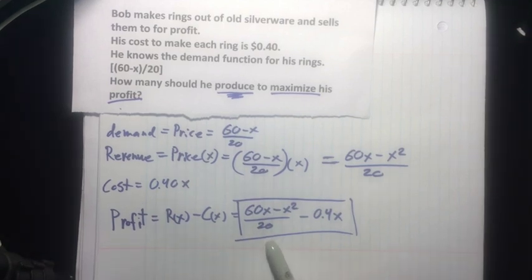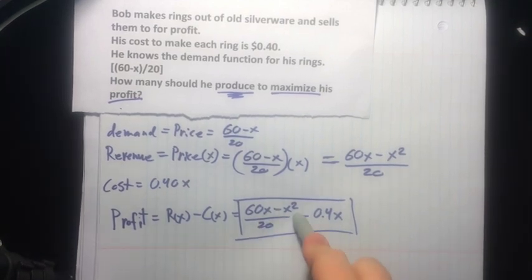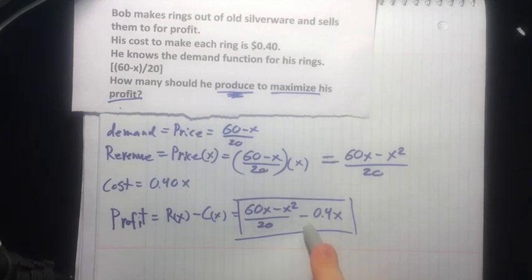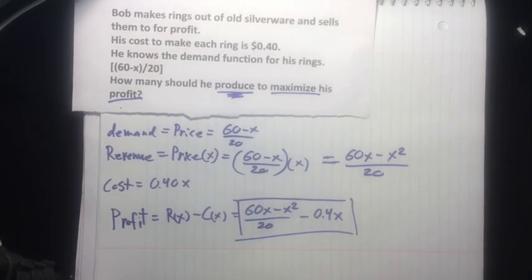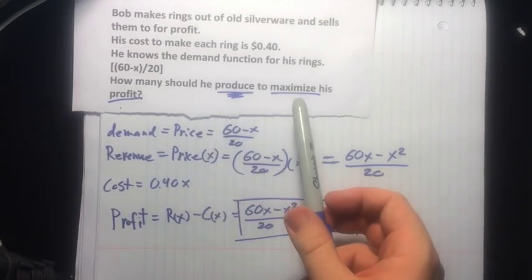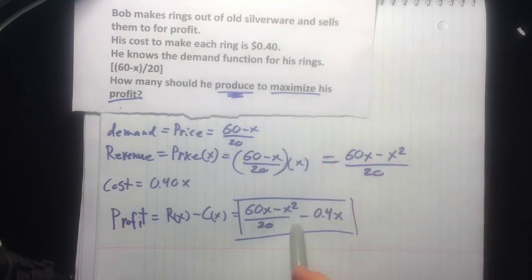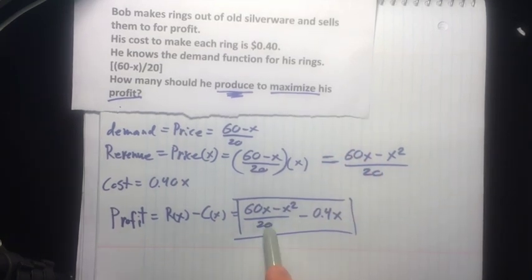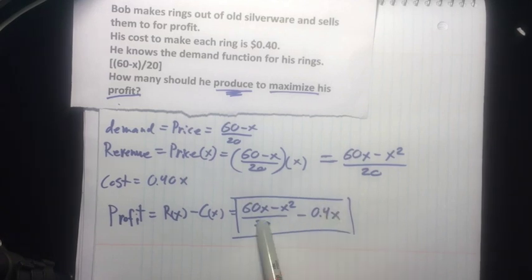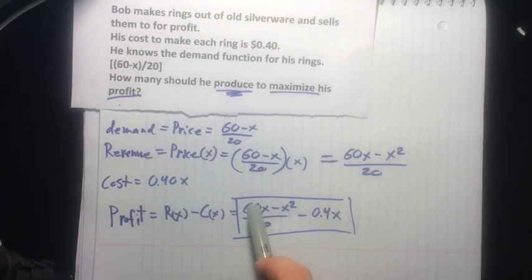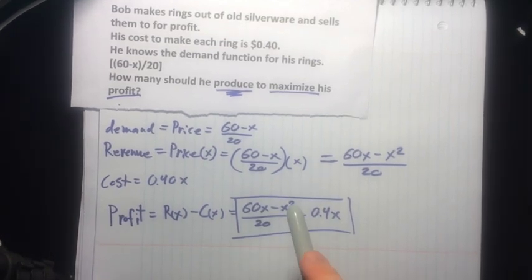I have an equation here. And I can plug in for any value of x and find out exactly how much profit Bob is going to make. But that's not really what I want. I want to know the maximum profit. So I don't want to know how much he'll make if he makes 1 or 10 or 50 of these rings. I want to know which is the best. And we can do that using derivatives.